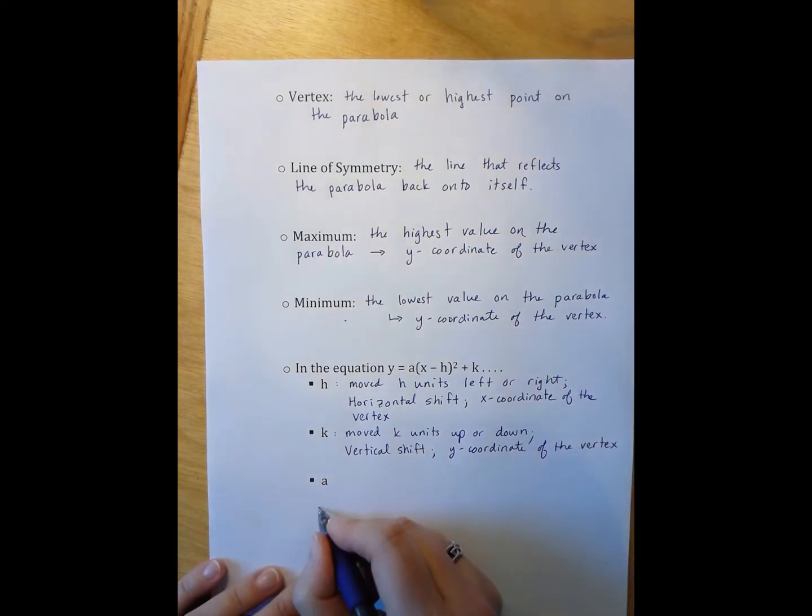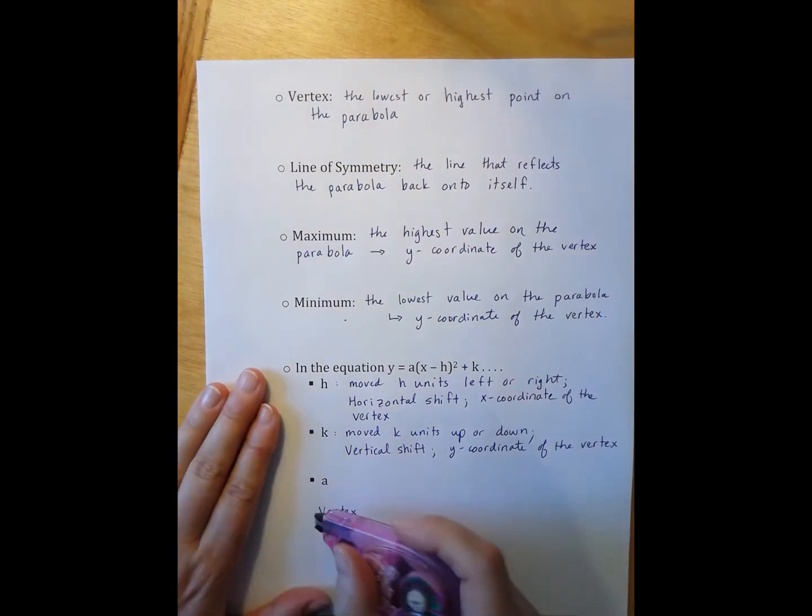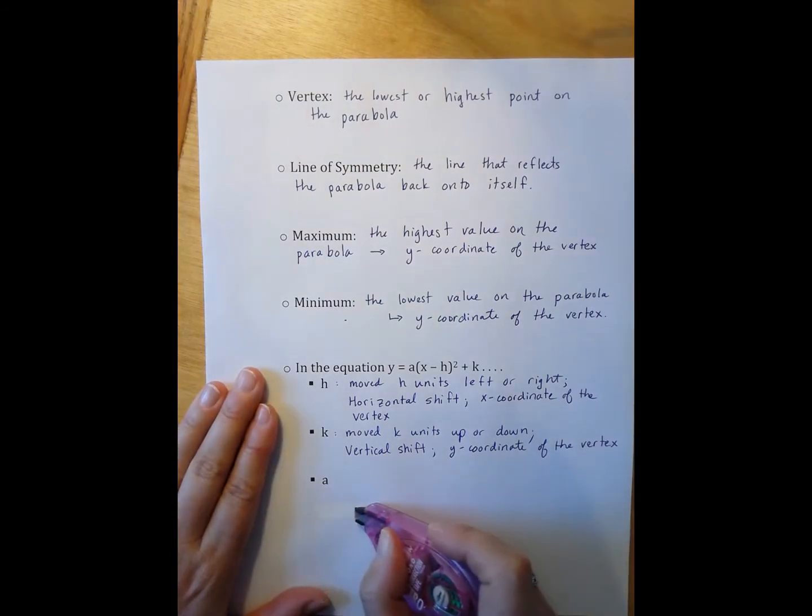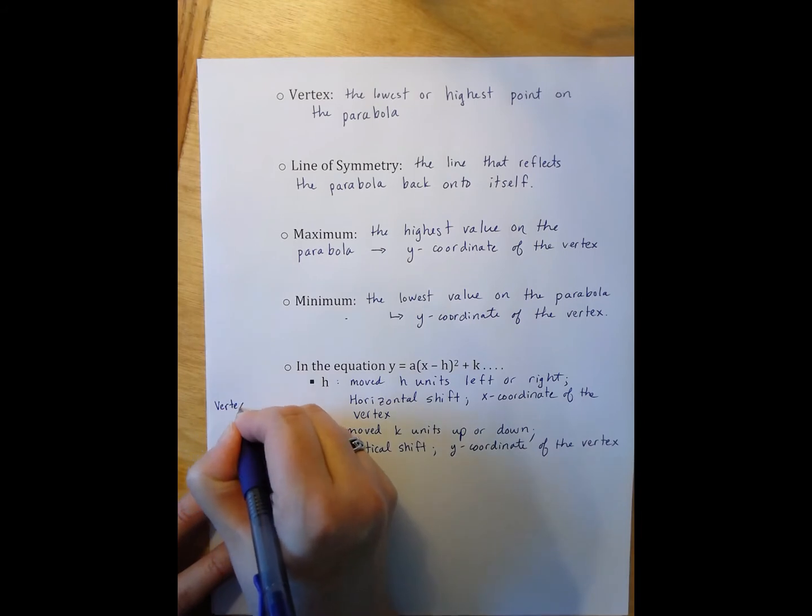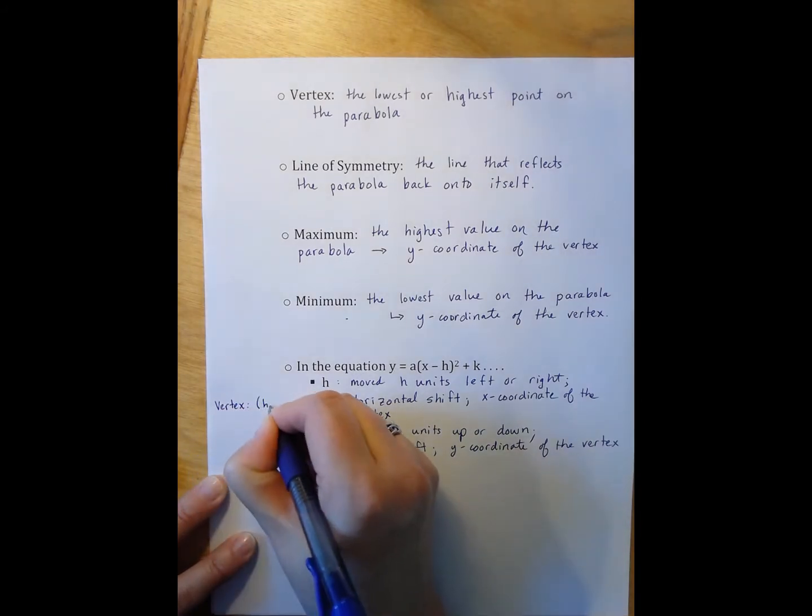Which means I now can say that the vertex is the point h, k. So now the a. The a actually plays the role both of the vertical stretch or dilation and whether or not the parabola has been reflected.